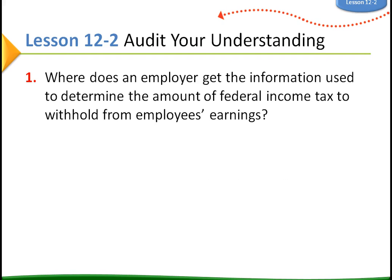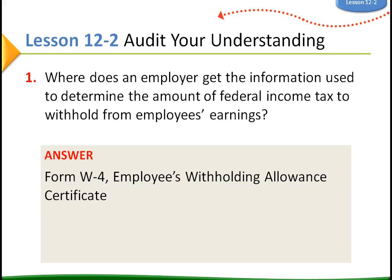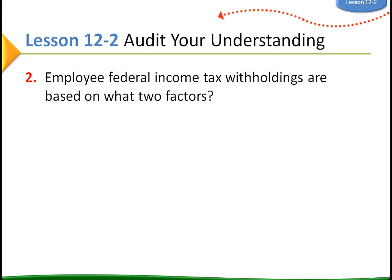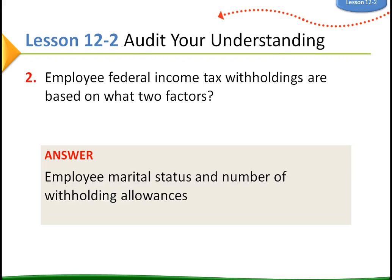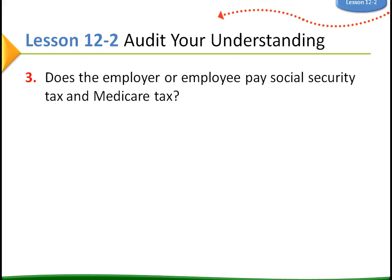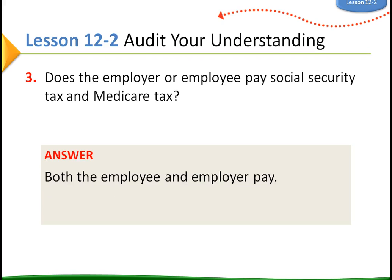Audit your understanding: Where does an employer get information to determine federal income tax withholding? From the W-4 form, filled out when you start working. Federal income tax withholdings are based on two factors: marital status and the number of withholding allowances. Does the employer or employee pay Social Security and Medicare tax? Both do — and if you're self-employed, you pay both portions yourself.